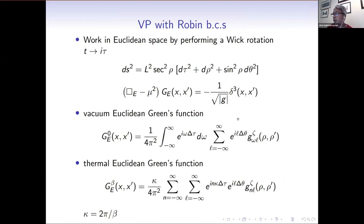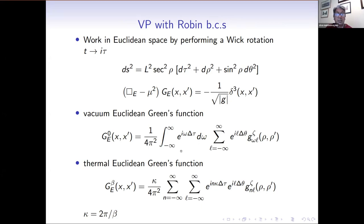We now turn attention to the vacuum polarization with Robin boundary conditions. To do this, we work in Euclidean space by performing a Wick rotation of the metric as shown here. The Euclidean Green's functions satisfy a very similar PDE — this is now the d'Alembertian in Euclidean space — with a three-dimensional Dirac delta function. We use Fourier transforms of the delta function to give an ansatz for both the vacuum and thermal Euclidean Green's functions, shown here. The integral form is for the vacuum Green's function and the sum form for the thermal. Here kappa is 2pi over beta, G is our radial Green's function, and we impose boundary conditions at the spacetime boundary.